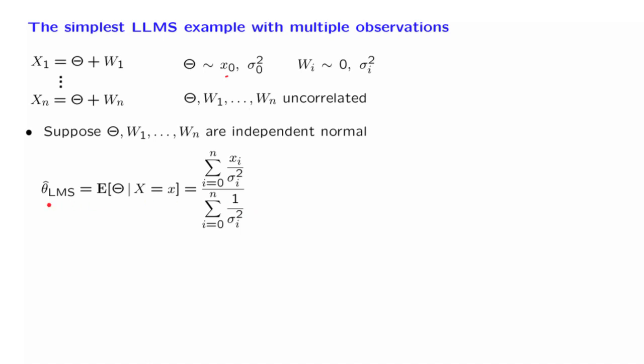This was the form of the optimal estimate of theta if you obtain values for the different observations, little xi.